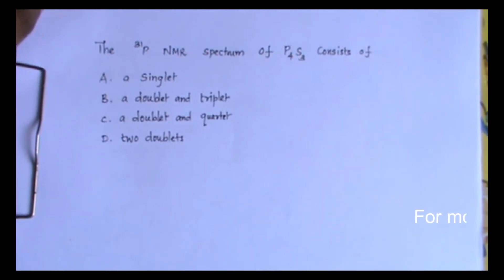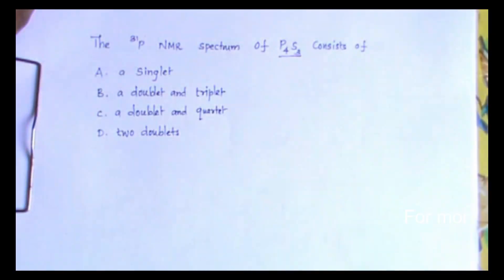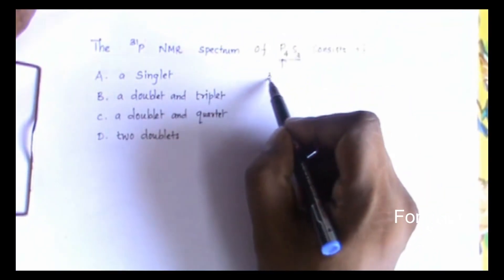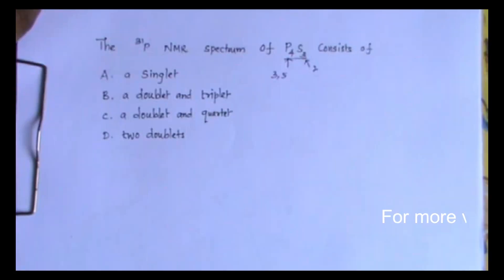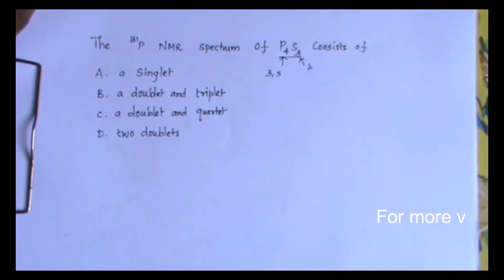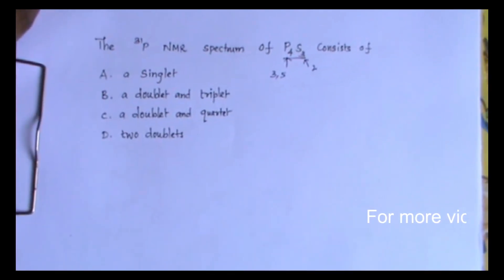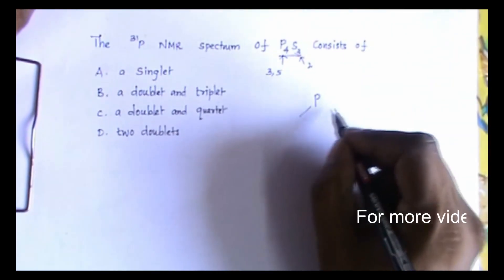First you should know the structure of P4S3. The valency of phosphorus may be three or five, sulfur valency is two. We have to draw a structure which satisfies this condition. If you know the structure it will be very easy to solve this problem.